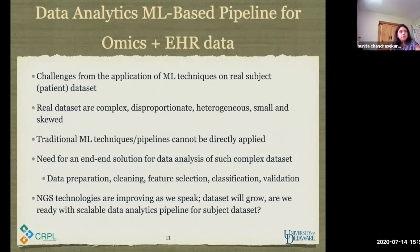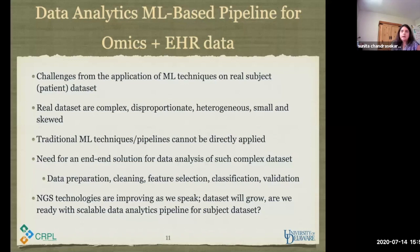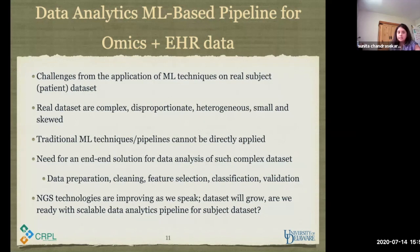Some challenges include cleaning up the dataset — skewed, heterogeneous, disproportionate, complex, and small, because real datasets take a while before you can build a large voluminous dataset. NGS instruments, while sequencing technology has improved quite a bit, there is a process from the output of NGS technology to preparing de-identified data that comes to people like us who are the data analysts. Real datasets are typically small. Machine learning learns from large datasets before it can build a model, so small datasets are a pain for machine learning.